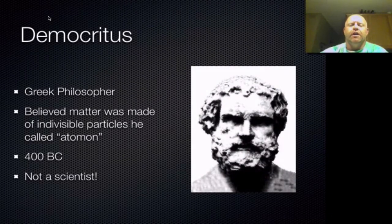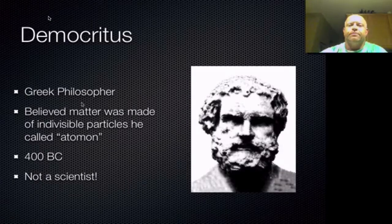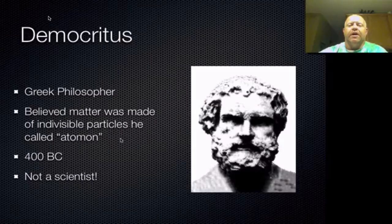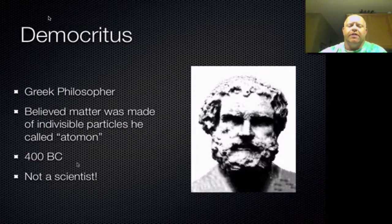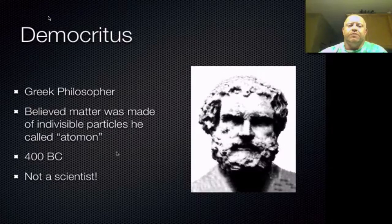The first person we want to talk about in a historical aspect is Democritus. Democritus was not a scientist — he was a Greek philosopher. He was credited with basically being the first person to have the idea that all matter has to be divisible, and you can break it down into smaller and smaller pieces, and at some point you have to get to an end of that division. The end of that division is what we now call the atom. We're talking about 400 B.C. He wasn't a person who did experimentation — he just kind of developed that idea that there have to be building blocks within nature.